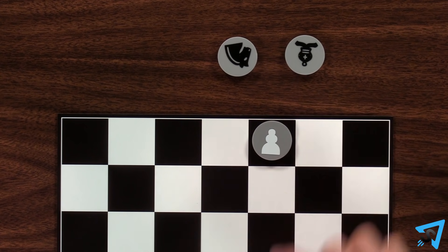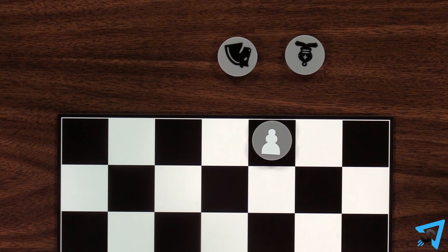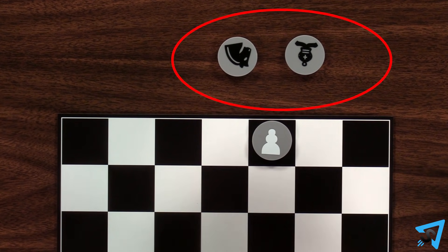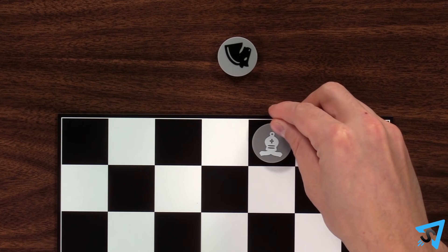When you move a pawn to the furthest row, you may promote that pawn to any piece in your opponent's pool, removing that piece from their pool.